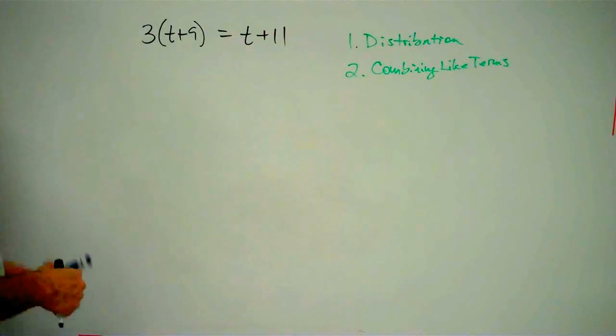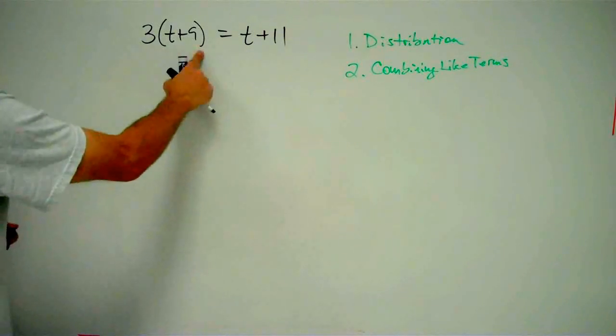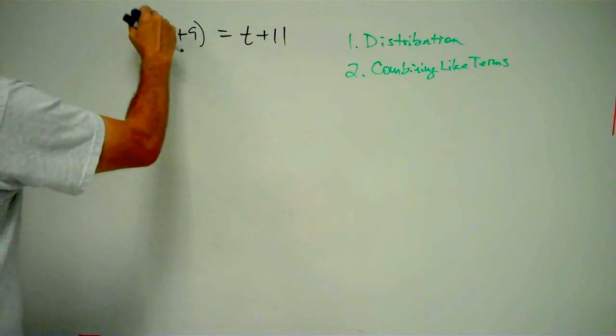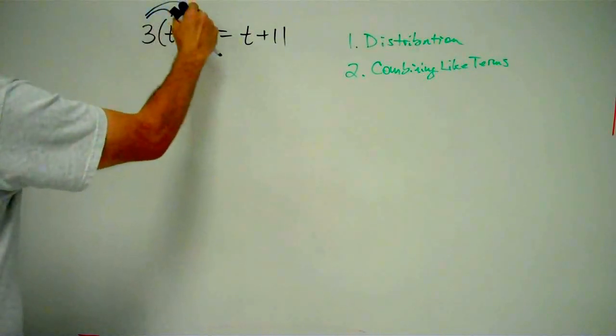So, first step, what do we do? We distribute. Let's distribute across these pesky parentheses here. So, 3 times t and 3 times 9.